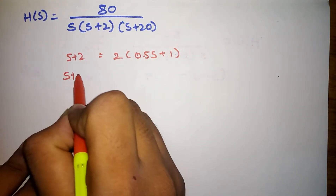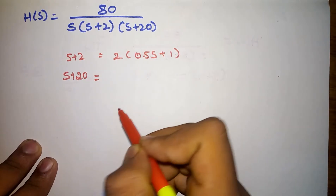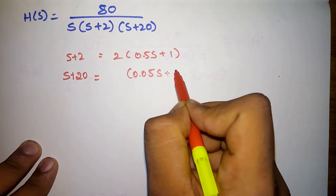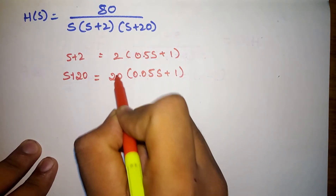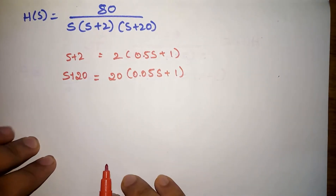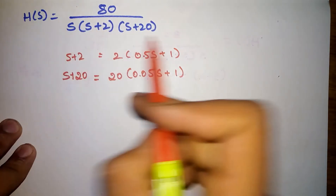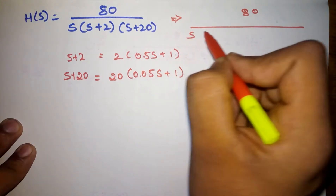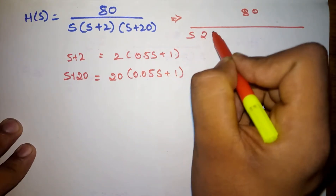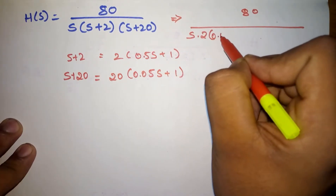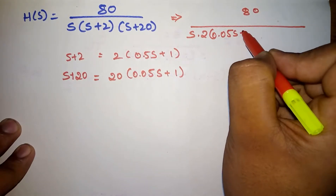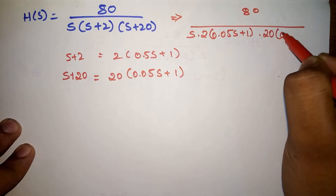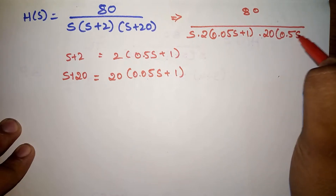Similarly, we also have (s plus 20), which can be written as 20 into (0.05s plus 1) if we take 20 common. Now our transfer function changes to 80 divided by s into 2 into (0.05s plus 1) into 20 into (0.05s plus 1).